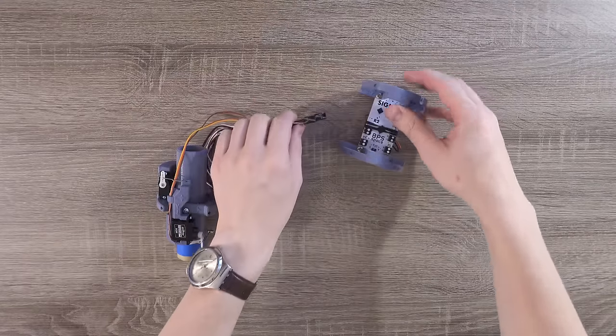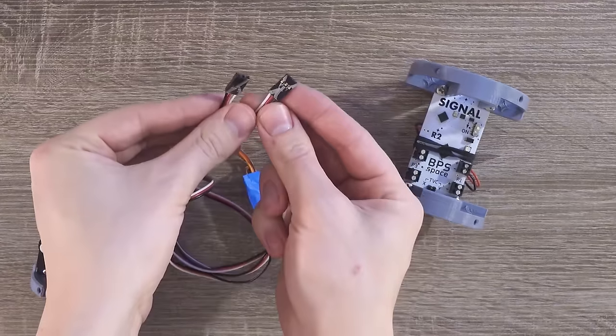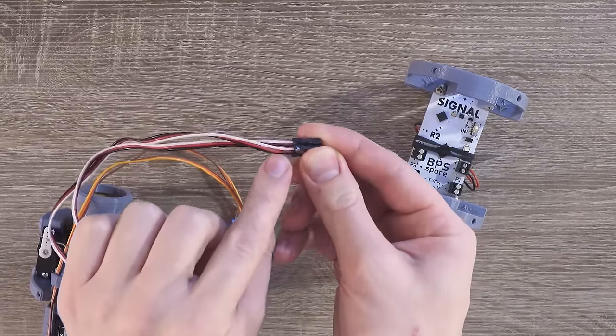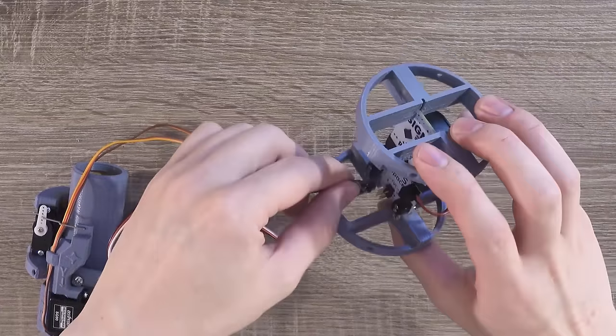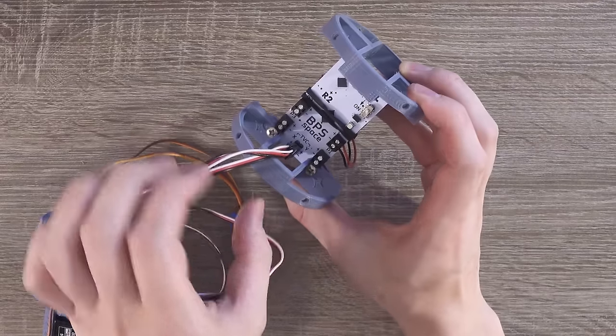Now it's time to wire the thrust vectoring mount to the flight computer. When you plug the cables in, make sure they're in the right orientation. The white wire should be closer to the top of the computer, and the black wire should be closer to the bottom.